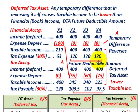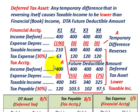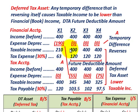Now let's look at our taxable amounts. For a deferred tax asset, we compare taxable income under financial accounting versus tax accounting. We're going to have lower taxable income in the later years for tax accounting versus financial accounting.